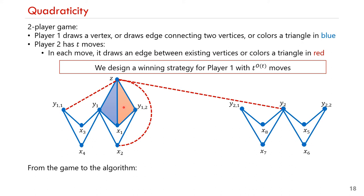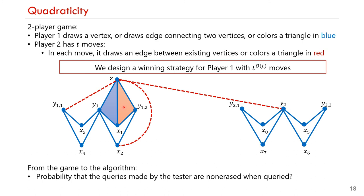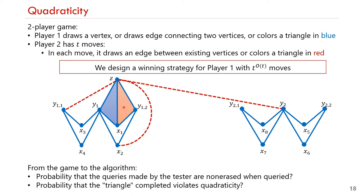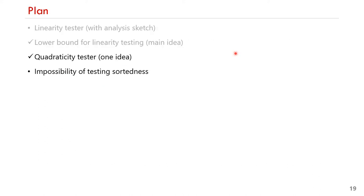To go from this game to the tester, there are a few other challenges to overcome. First, we need to analyze the probability that the queries made by the tester are non-erased when queried, because unlike in the game, the tester cannot see the erasures made by the adversary. Secondly, the tester does not just want to catch a completed triangle, but needs to catch one that violates quadraticity. Thus we need to analyze the probability that the completed triangle is violating.